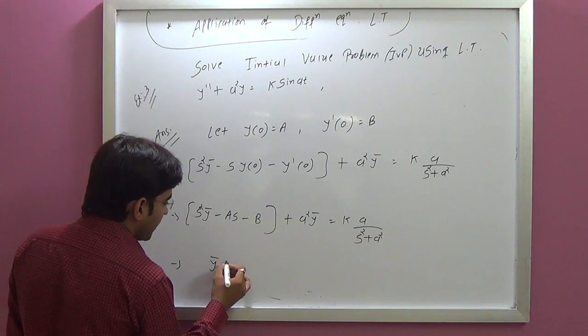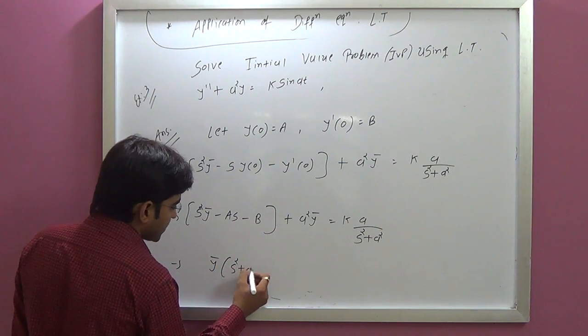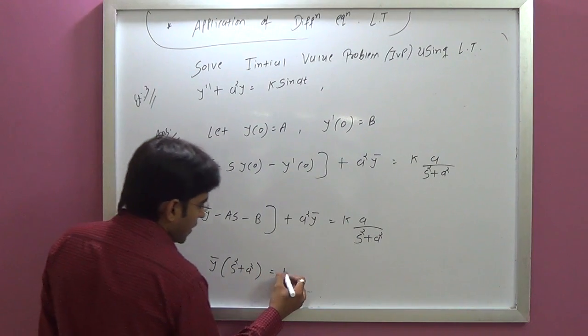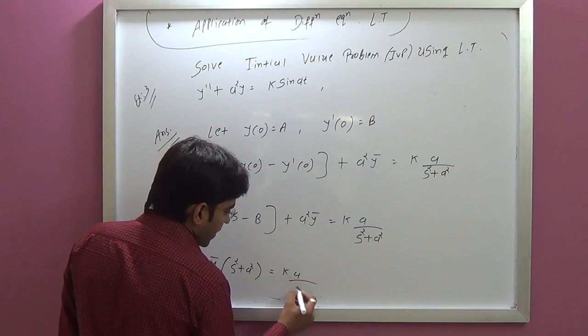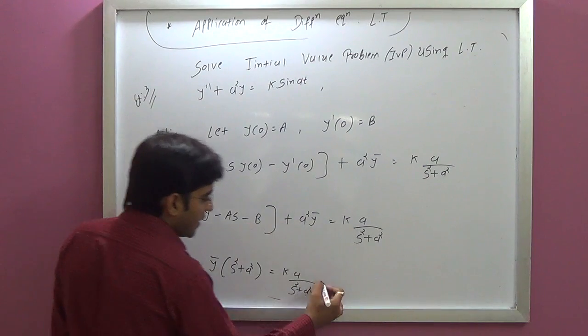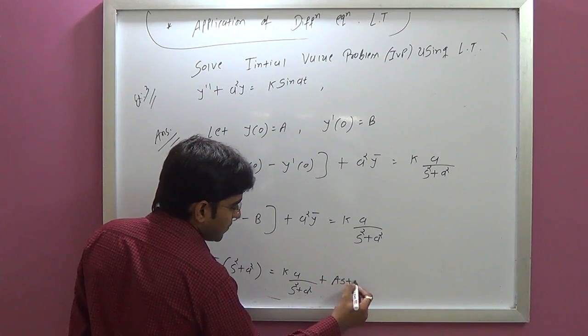Isolating Y-bar: s-squared plus a-squared times Y-bar equals k·a over s-squared plus a-squared, giving Y-bar equals (as plus b) over s-squared plus a-squared.